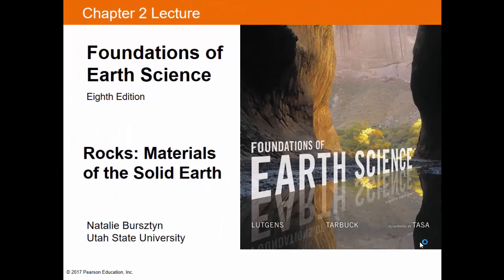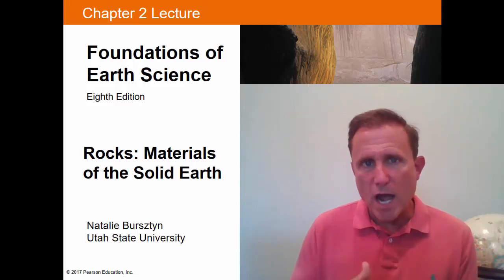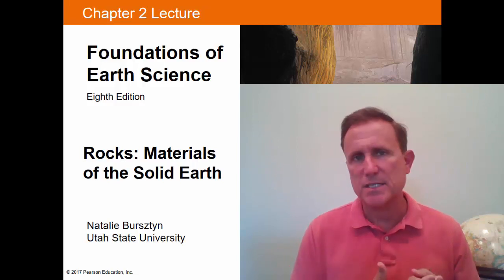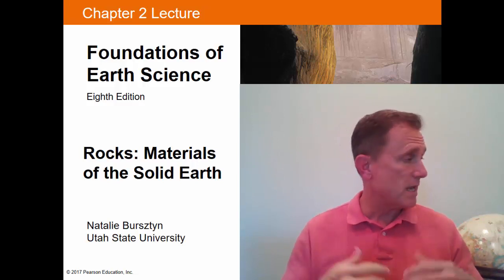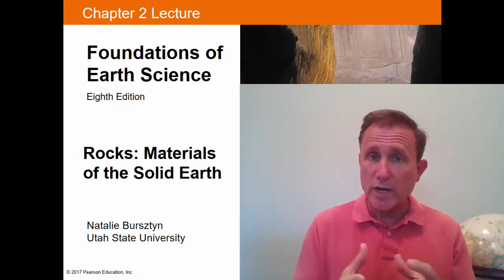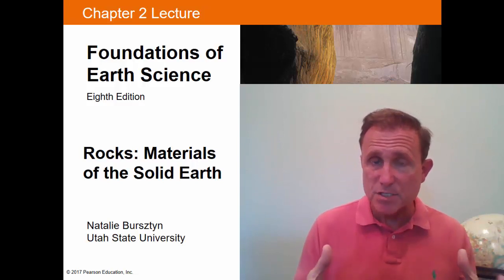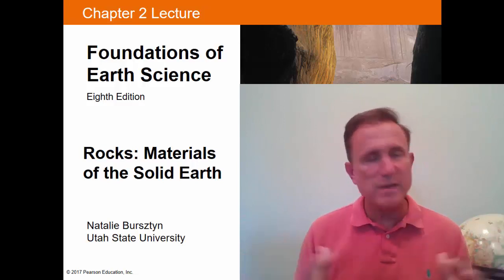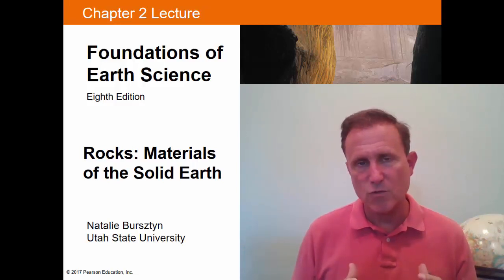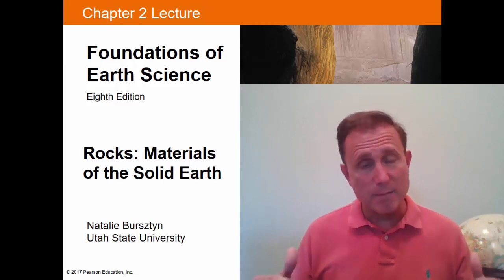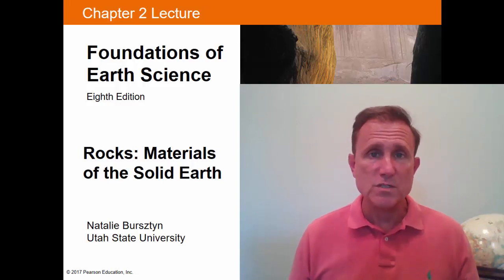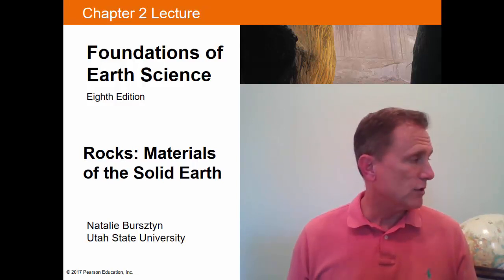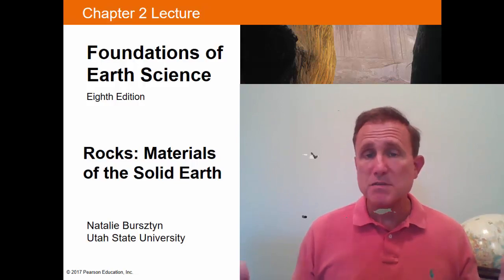That was Chapter 2 from Foundations of Earth Science, 8th edition by Lutkins and Tarbuck — Chapter 2 on Rocks: the Materials of the Solid Earth, covering igneous, sedimentary, and metamorphic rocks. As we move into Chapter 3, we'll talk about landscapes of the solid earth, including mass wasting — the movement of material downhill under gravity — and how landscapes are shaped by that movement and by water. See you for Chapter 3: Landscapes Fashioned by Water.